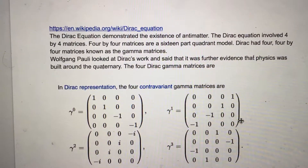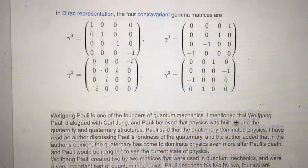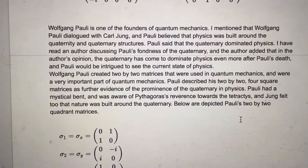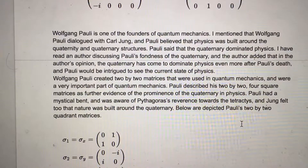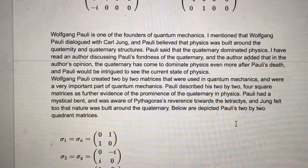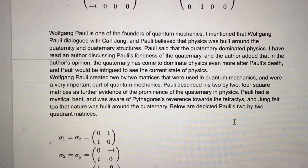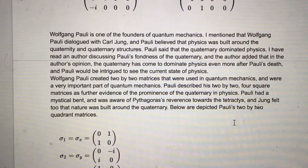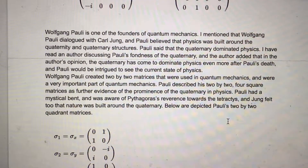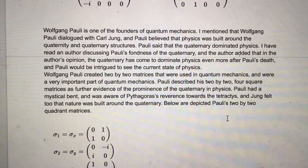Wolfgang Pauli looked at Dirac's work and said that it was further evidence that physics was built around the quaternary. Dirac is one of the founders of quantum mechanics. Pauli believed that physics was built around the quaternary and quaternary structures, and said that the quaternary dominated physics. Wolfgang Pauli created two-by-two matrices that were a very important part of quantum mechanics, describing them as further evidence of the prominence of the quaternary in physics.